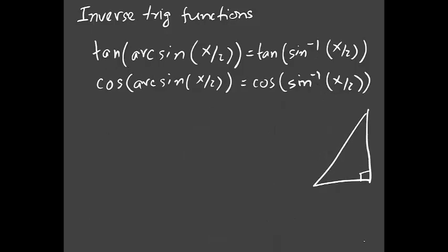Now we have two more examples done in a very similar way. We have tangent of arc sine, or tangent of sine inverse. The right triangle is constructed from sine inverse — sine is opposite over hypotenuse, so opposite is x and hypotenuse is 2. Using the Pythagorean theorem, the adjacent side is √(4 - x²), completing the right triangle.